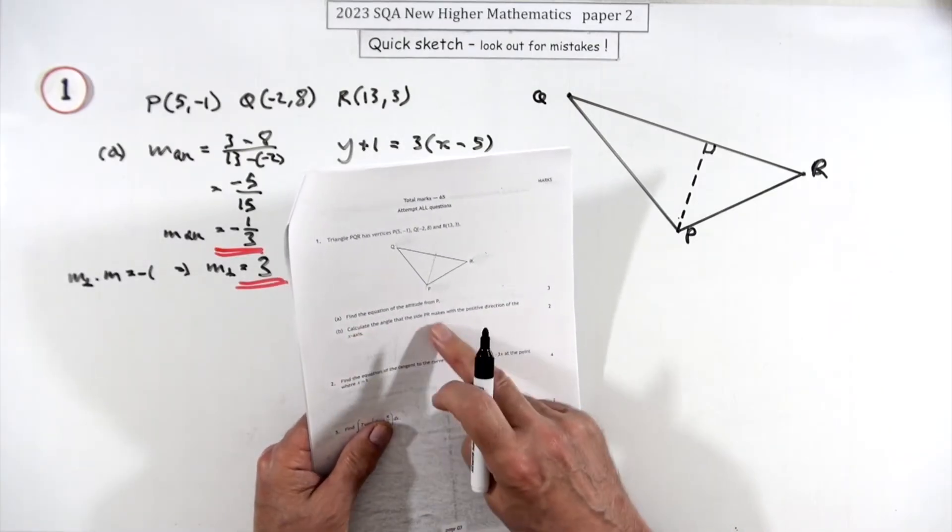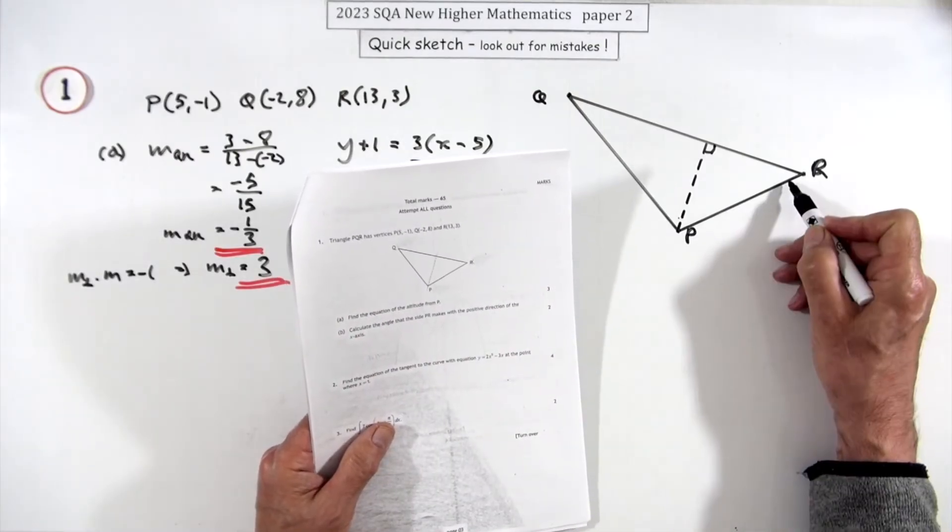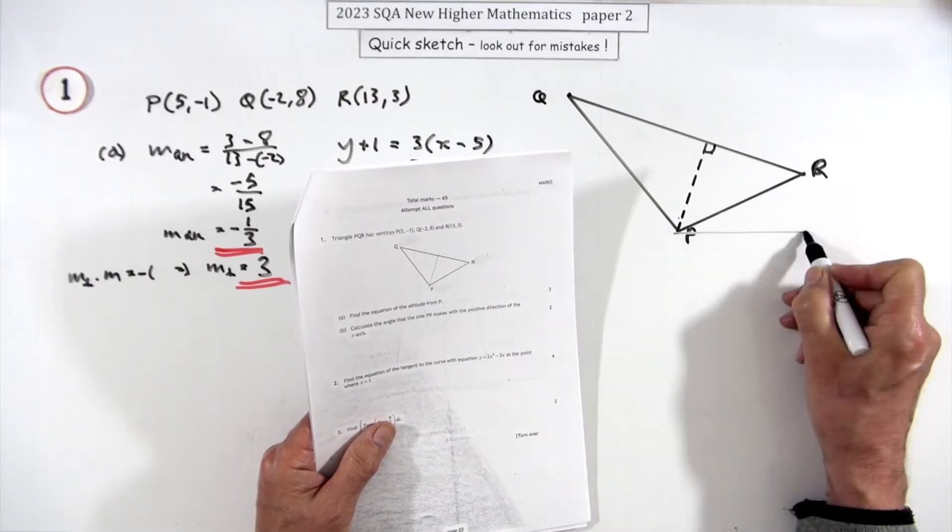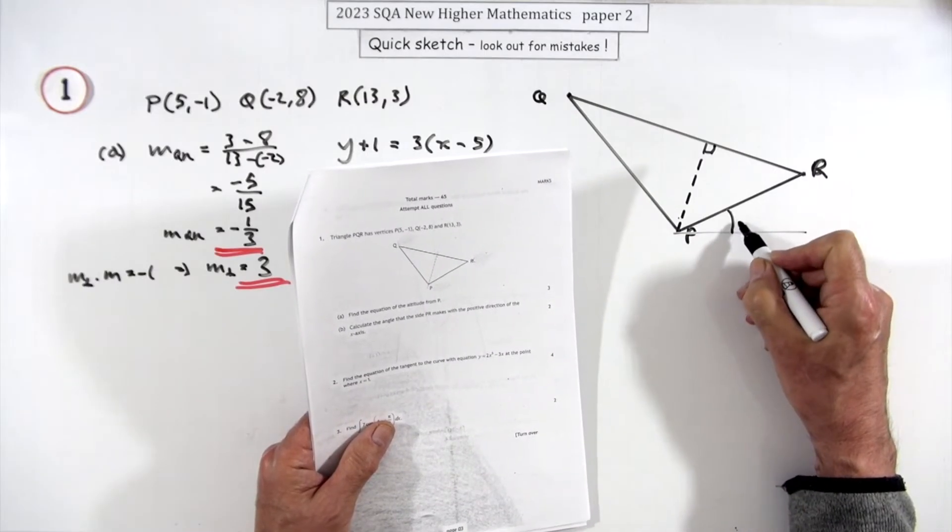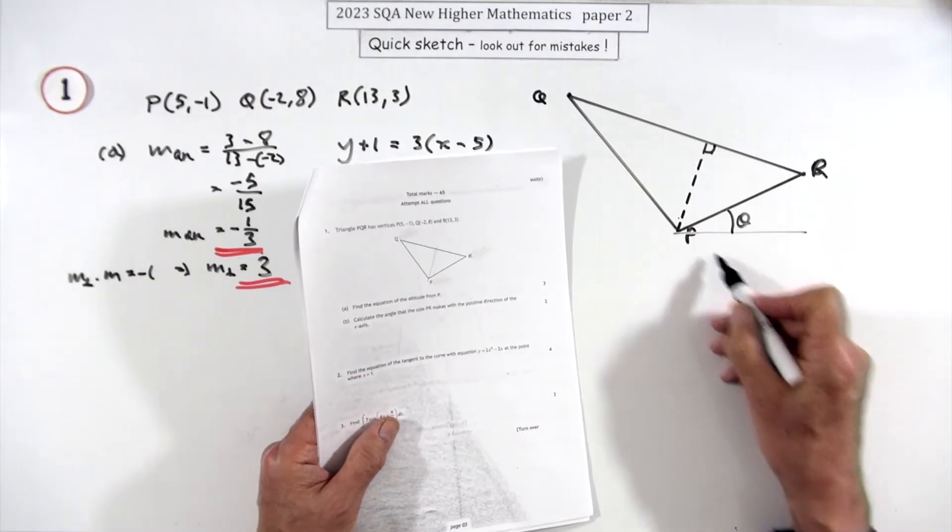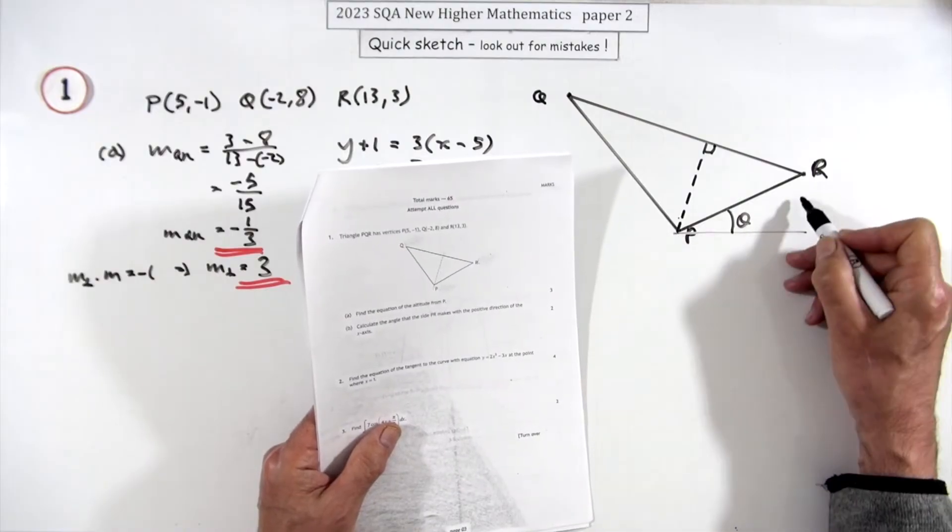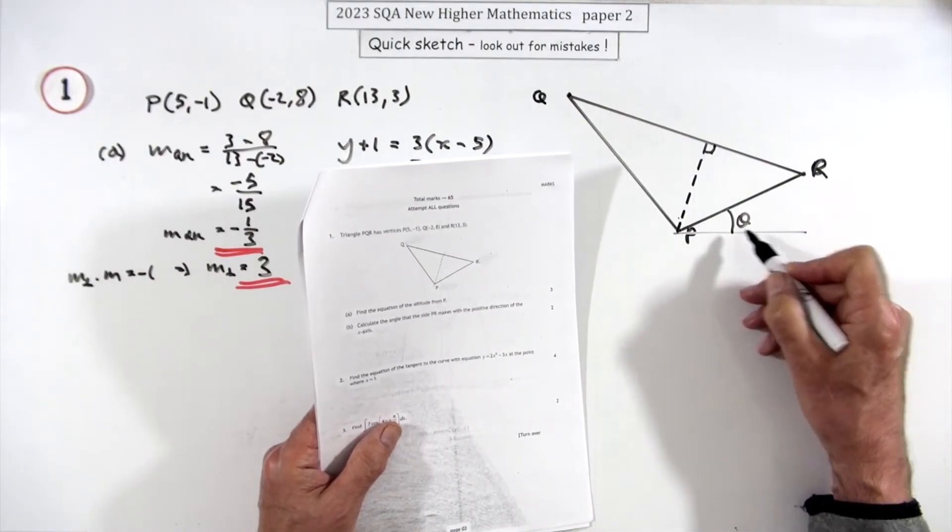Part b said what's the angle that the side PR makes with the positive direction of the x-axis. So what's this angle in here? If you just call it theta, well you know the distance along, you know the distance up, so you're just going to use the tangent, which effectively just means distance up over distance along, what's the gradient.